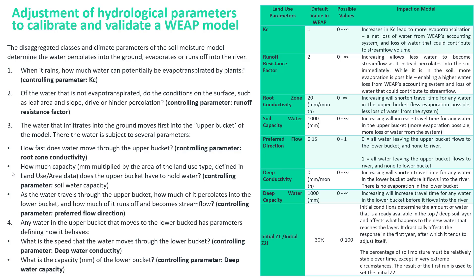The conductivity and water capacity of the root zone and the preferred flow direction control how fast the water moves through the top layer, how much percolates the deep layer, and how much flows into the river.